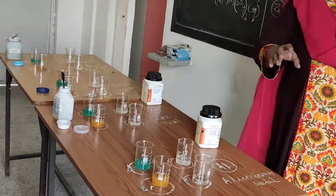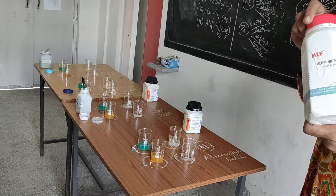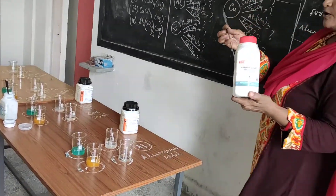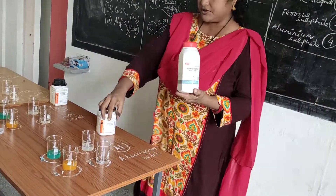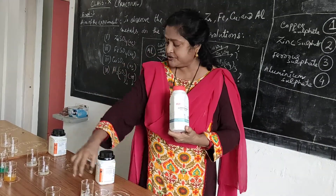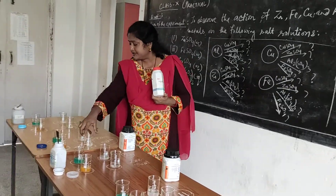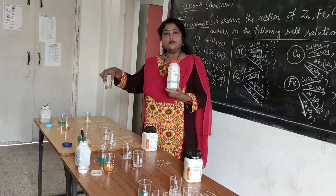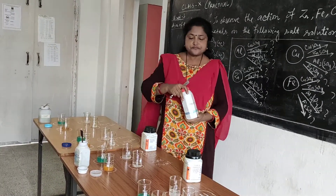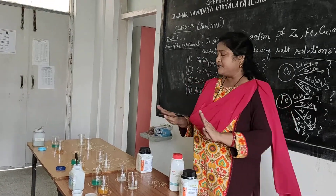The fourth beaker for each table is aluminium sulfate. I have taken aluminium sulfate solution — you are seeing aluminium sulfate solution at all four tables. Now all four solutions are set up.